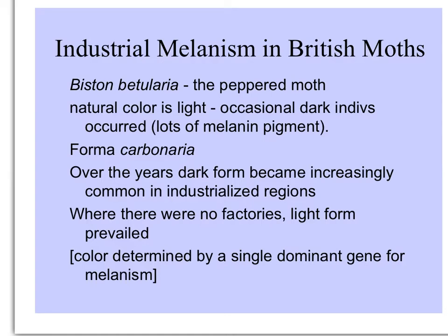It has a natural color — light with black spots, so it looks like it has pepper on it. Occasionally, a dark individual is produced that has lots of melanin in it. This is the carbonaria form. Over the years, that dark form became more and more common in industrialized regions because the factories spewing ash and pollution were coloring the bark of the trees darker. Where there were no factories, the light form was still predominant. The color was determined by a single dominant gene for melanism, so it was easily and quickly selected.